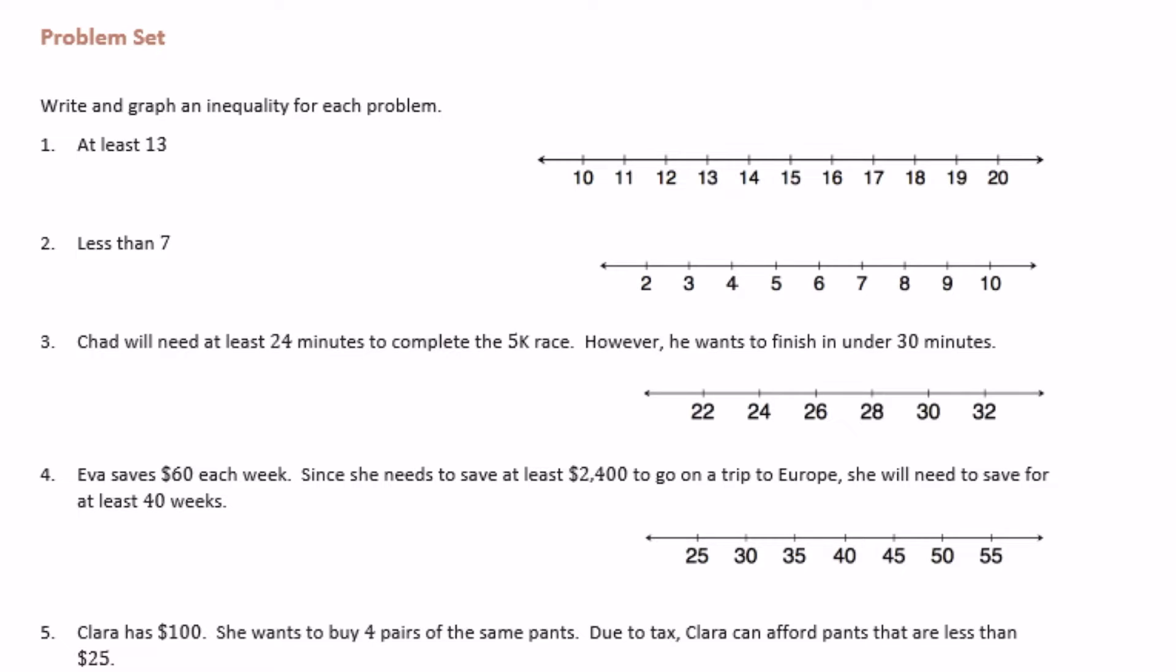So something is at least 13, so I'm going to circle 13. If it's at least 13 then it could include 13, so it's 13 or more. So I'm just going to use x. So x must be greater than or equal to 13 would be our inequality to represent that graph.